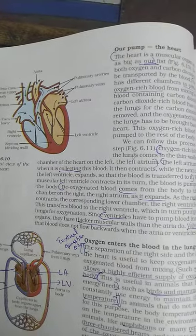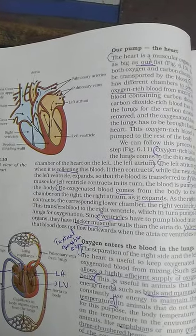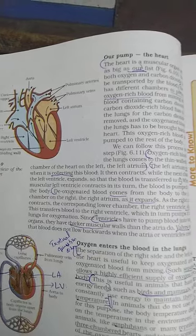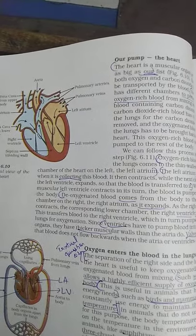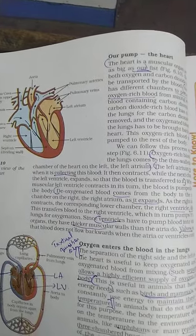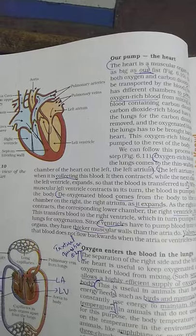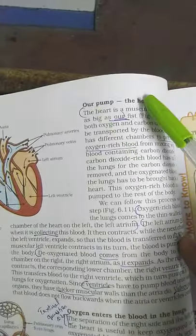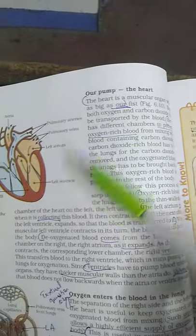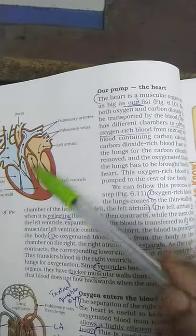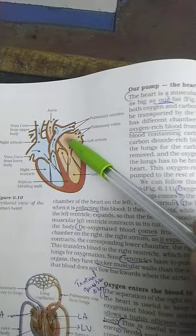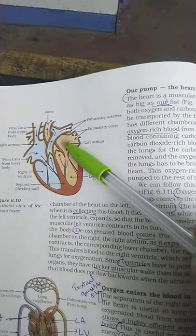Hello students, we are learning about lesson 6 life processes, and today we will be learning about the structure of the heart. This is video 9 of the chapter. See page number 106, here is our palm — the heart. The question is: explain the structure of the human heart, and this is the diagram you need to draw.